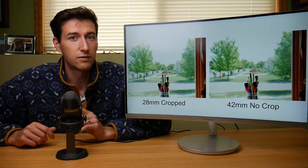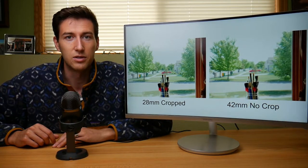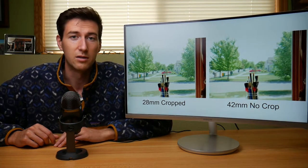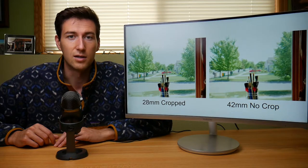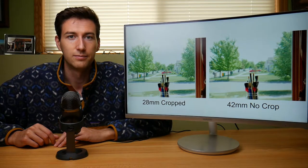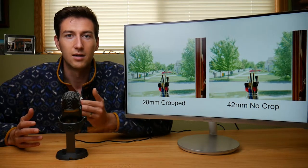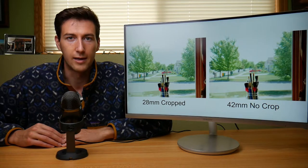There is one difference between these images, and that's depth of field. In the 42mm image there is a shallower depth of field — this is an effect of having a longer focal length.